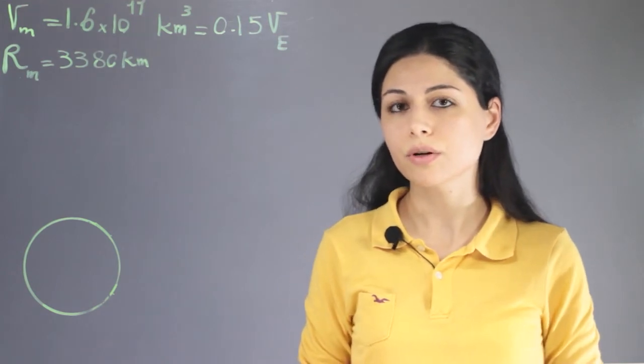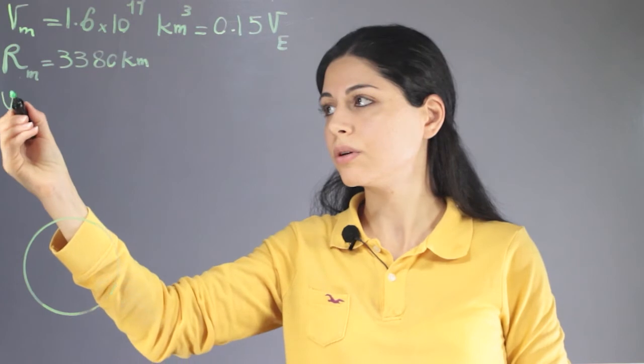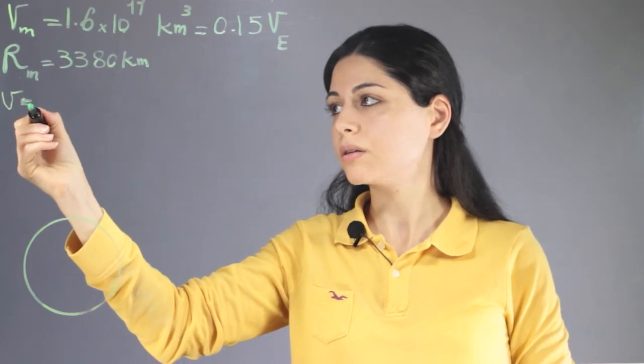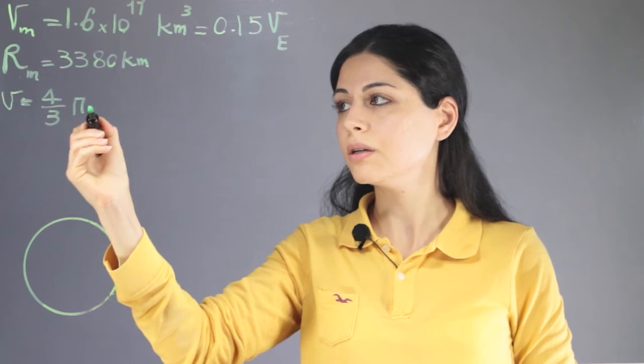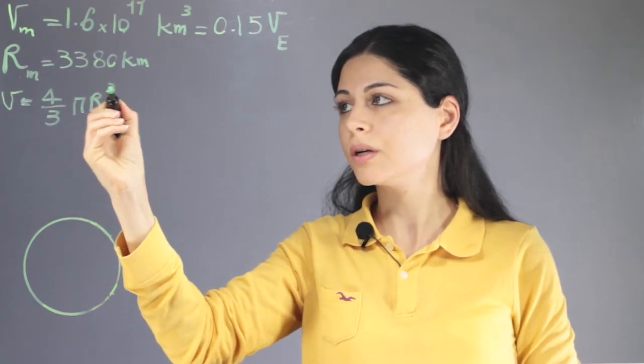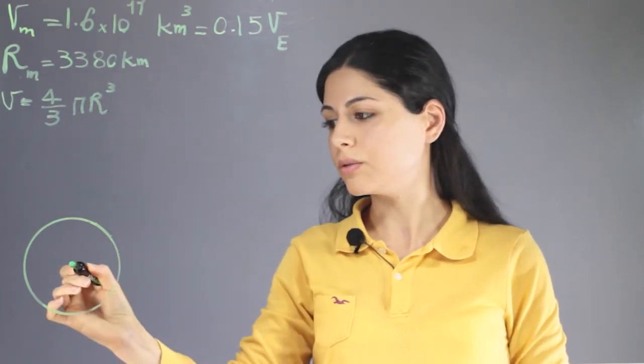You know that the general formula for any sphere is equal to 4 over 3 pi r cubed, where r is the radius of the sphere.